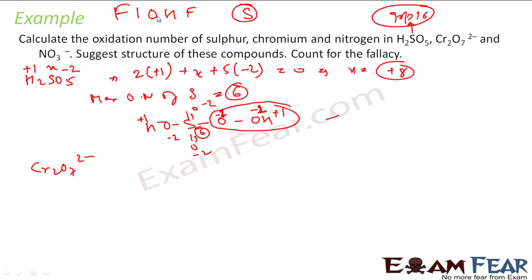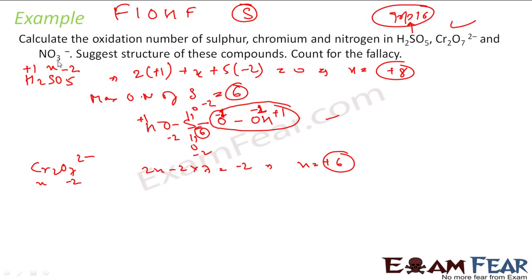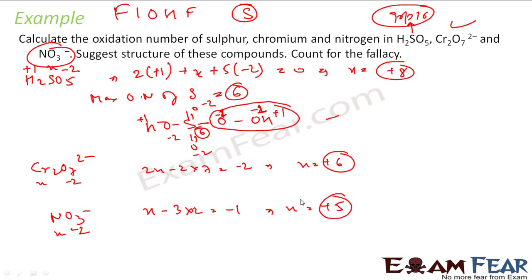For Cr₂O₇²⁻: O is minus two. Let Cr be x: 2x + 7(−2) = −2, solving gives x = plus six. Chromium is in Group 6, so plus six is acceptable — no issue. For NO₃⁻: O is minus two, let N be x: x + 3(−2) = −1, so x = plus five. Nitrogen is in Group 15, so plus five is fine.